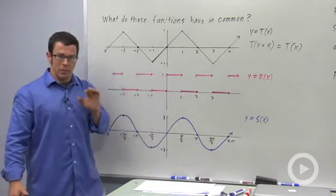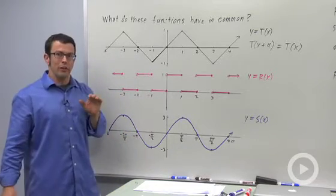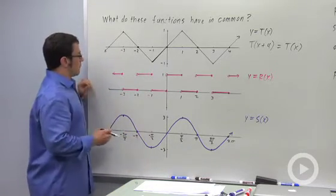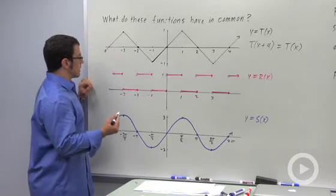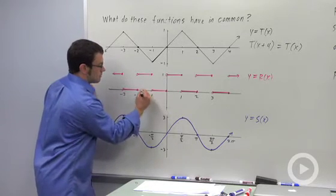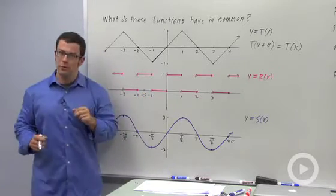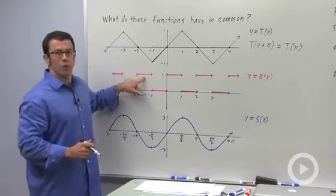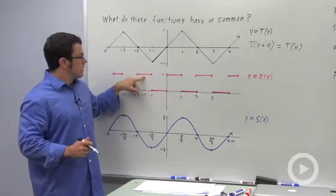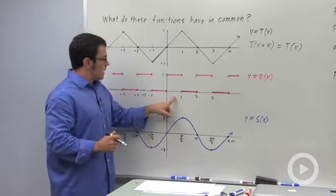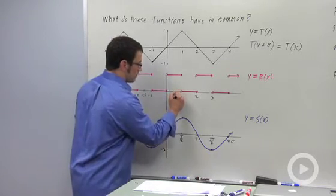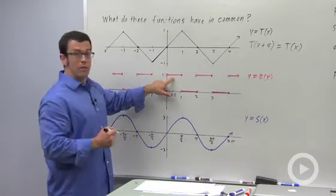But now I'm a little skeptical. I want to try this out for other inputs, so let me try it out for something like negative 1.5. At negative 1.5, the output is 1. If I add 2 to that, I get 0.5, and there the output is 1.